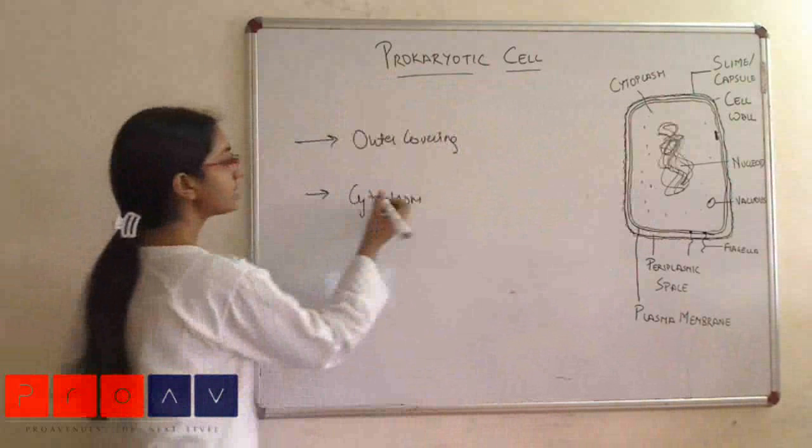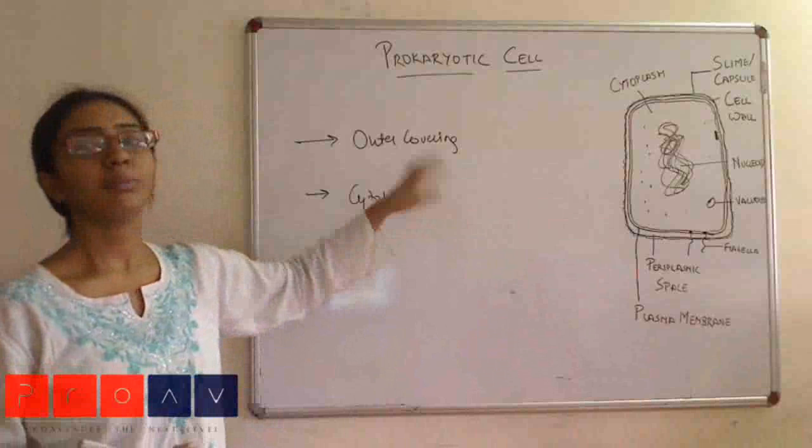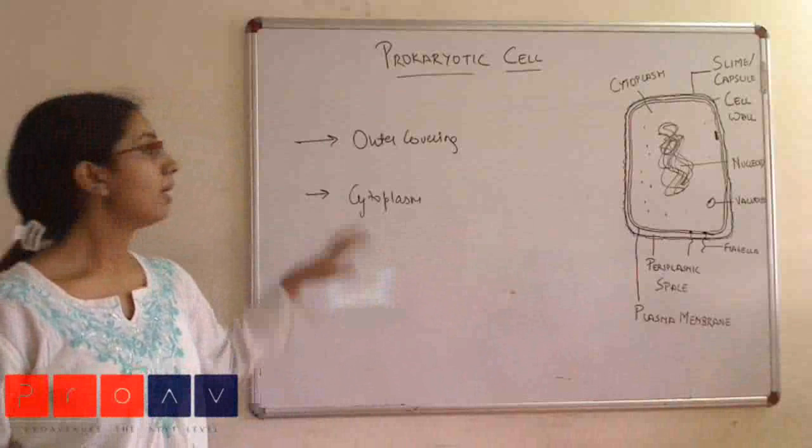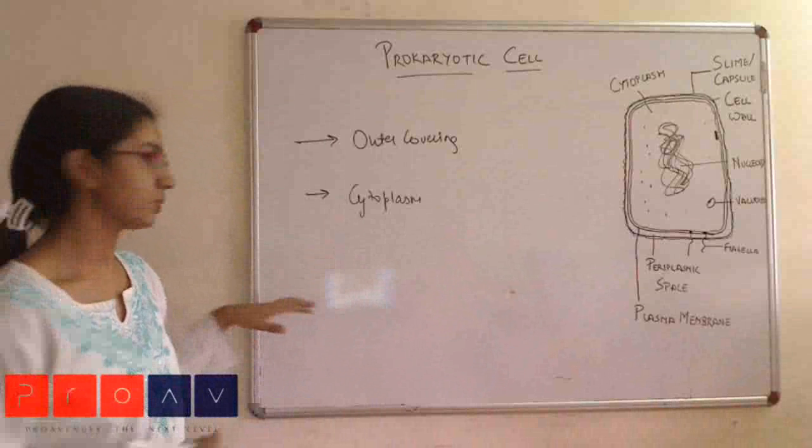This includes cytoplasm and the various other organelles that are present. In prokaryotic cells, mostly no organelles are present, but in eukaryotic cells you would have a large amount of organelles as well.